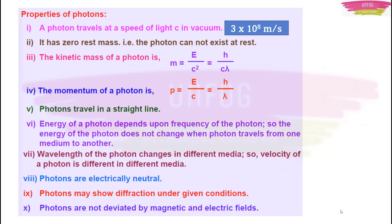The second property of a photon is very interesting — the photon has zero rest mass. Zero rest mass means if a photon is at rest, it has no mass. This means a photon cannot exist at rest; it can exist only if it is moving. Obviously, photon is light — if it is moving, you know light exists; otherwise it does not exist at all.